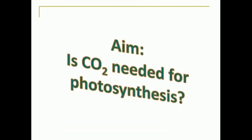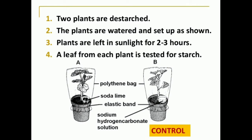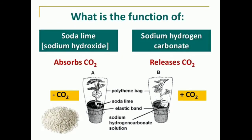We will now demonstrate the first experiment. The aim is to show that carbon dioxide is necessary for photosynthesis. For this, we take two de-starched plants, water them, and set them up. The plants are left in sunlight for two to three hours, then a leaf from each plant is tested for starch. In this experiment, we place crystals of potassium hydroxide — or sodium hydroxide — in a petri dish near plant A. Potassium hydroxide or sodium hydroxide absorbs carbon dioxide from the surroundings.